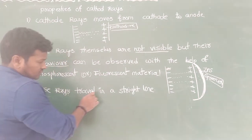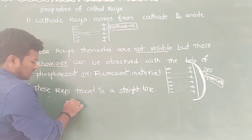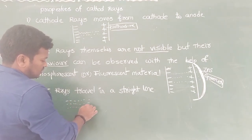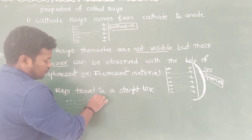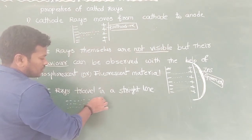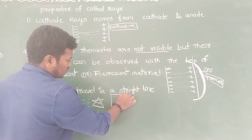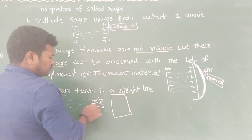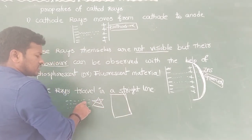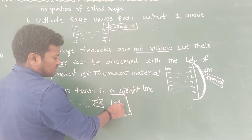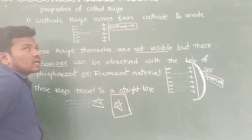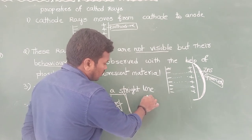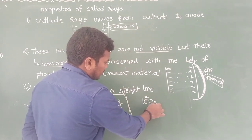Third, these rays travel in a straight line. To confirm this, if you place any material in their path, you can observe the shadow of that material cast on the zinc sulphide screen. This confirms straight-line travel. They also travel with a high speed of approximately 10 to the power of 7 centimetres per second.